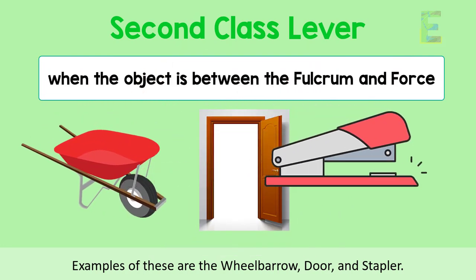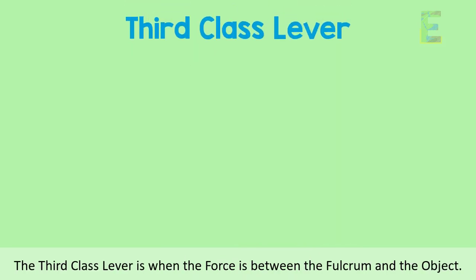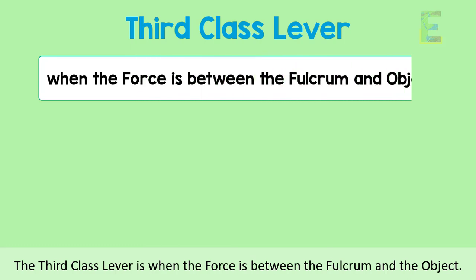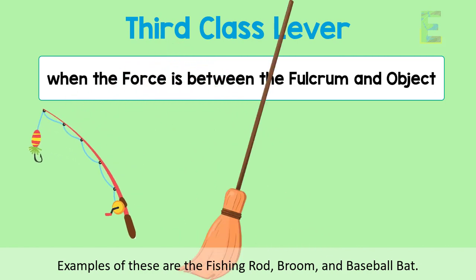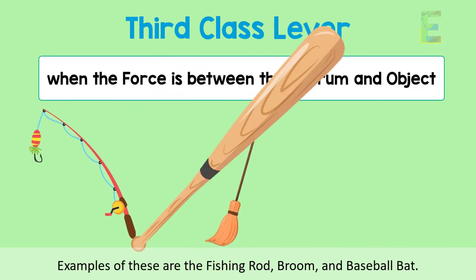And lastly, the third class lever is when the force is between the fulcrum and the object. Examples of this are the fishing rod, broom, and baseball bat.